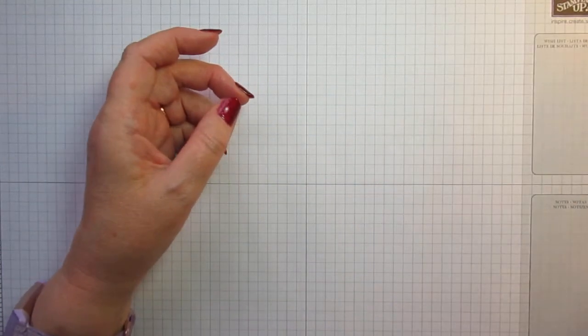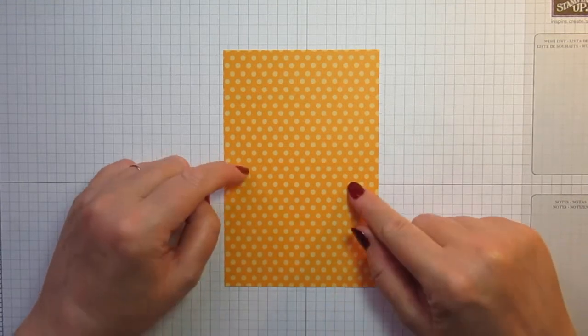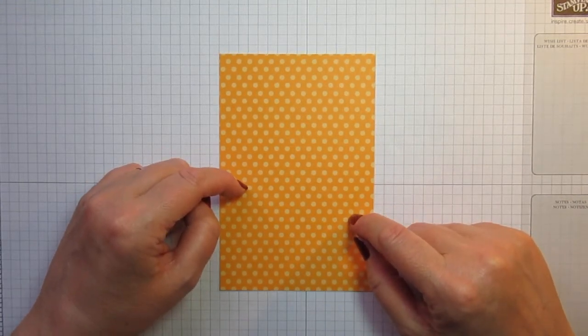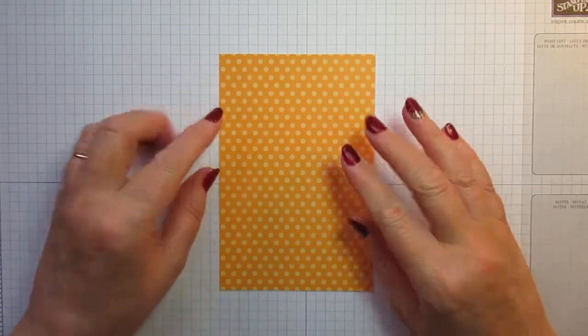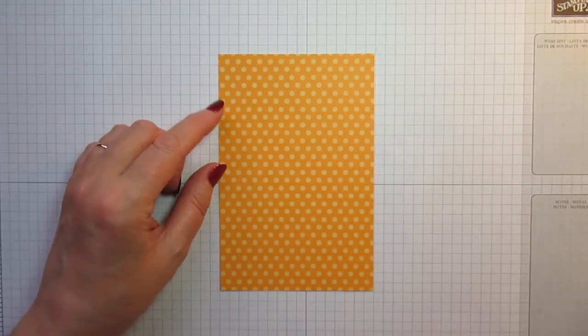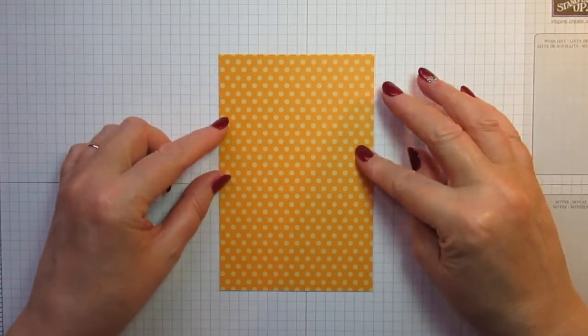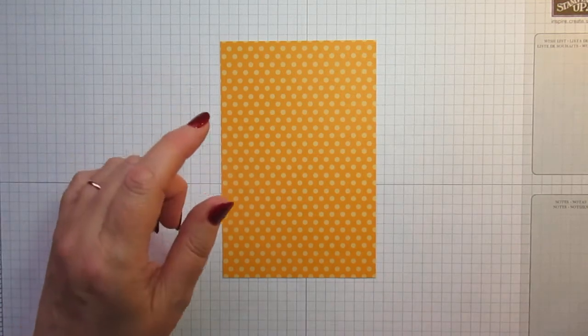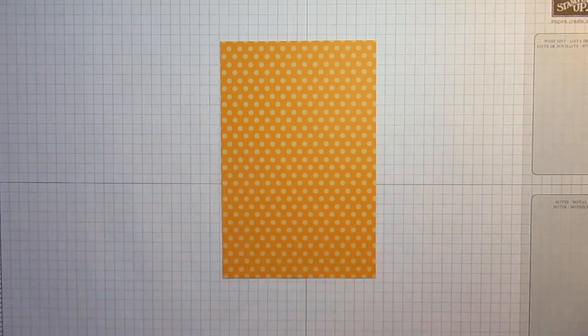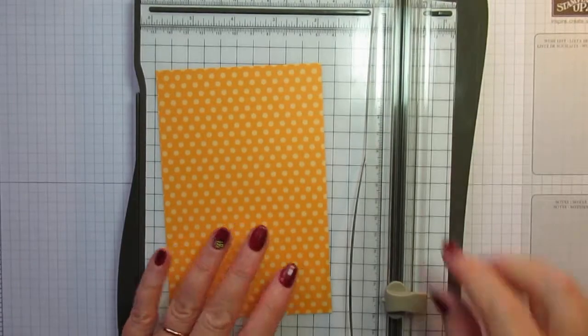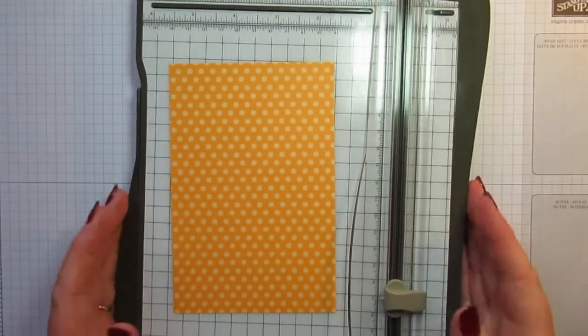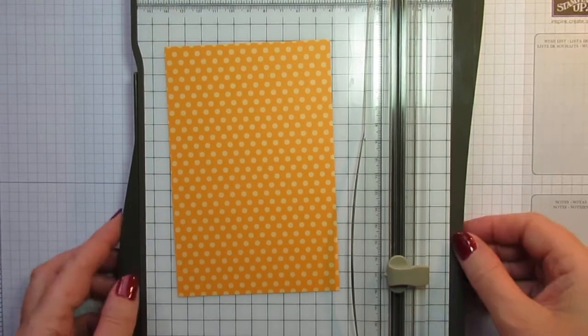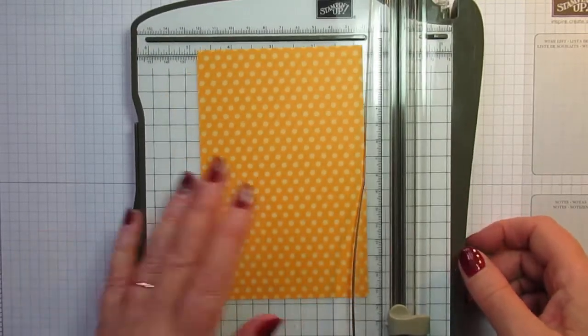This time I'm going to make one using the Mango Melody, which is also from the Brights 6x6 DSP Paper Pack. You need a piece of designer series paper measuring 6 inches by 4 inches. So if I bring in my trimmer to do the scoring on this, keeping the blade well out of the way, hopefully you can see this. Let me just double check if it's in shot so you can see the measurements.